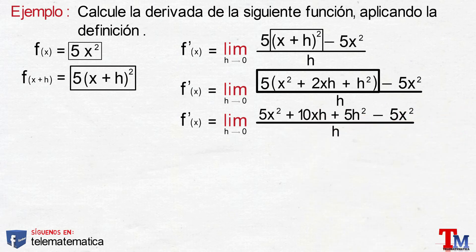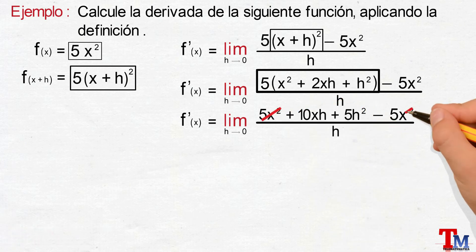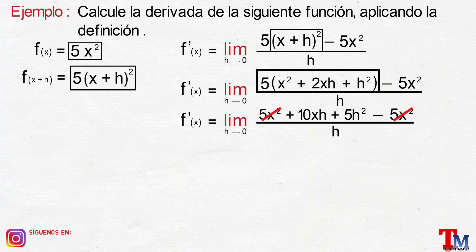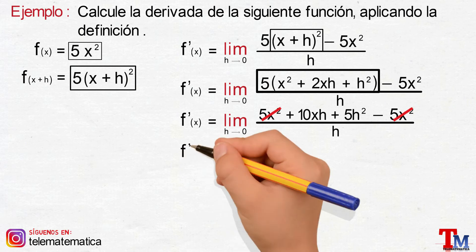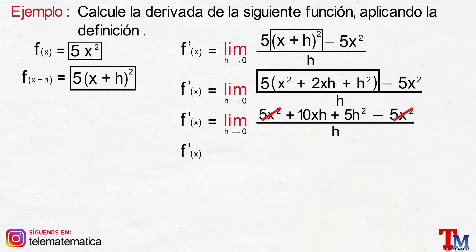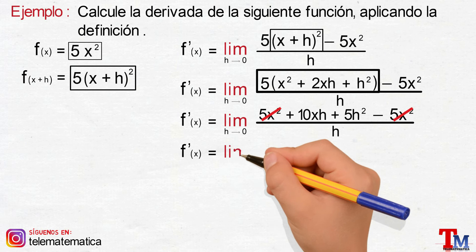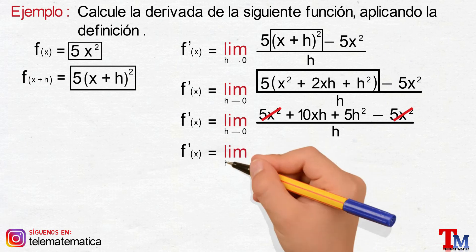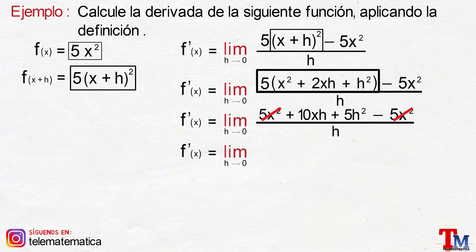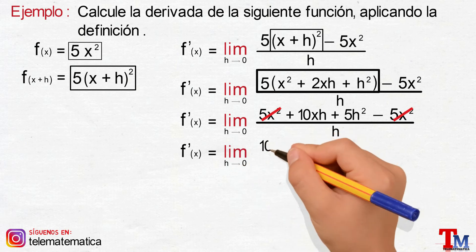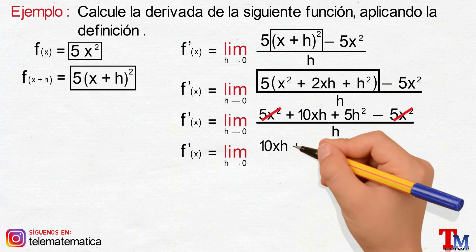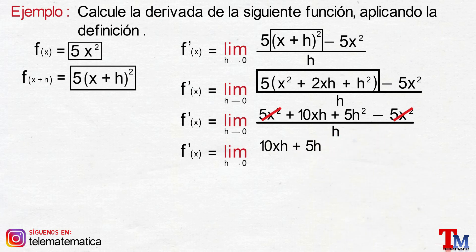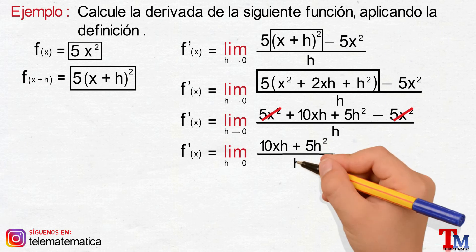Para el siguiente paso, agrupando y reduciendo términos semejantes, nos quedaría que la derivada de la función va a ser igual al límite cuando h tiende a 0, de 10xh más 5h elevado al cuadrado, y todo dividido para h.